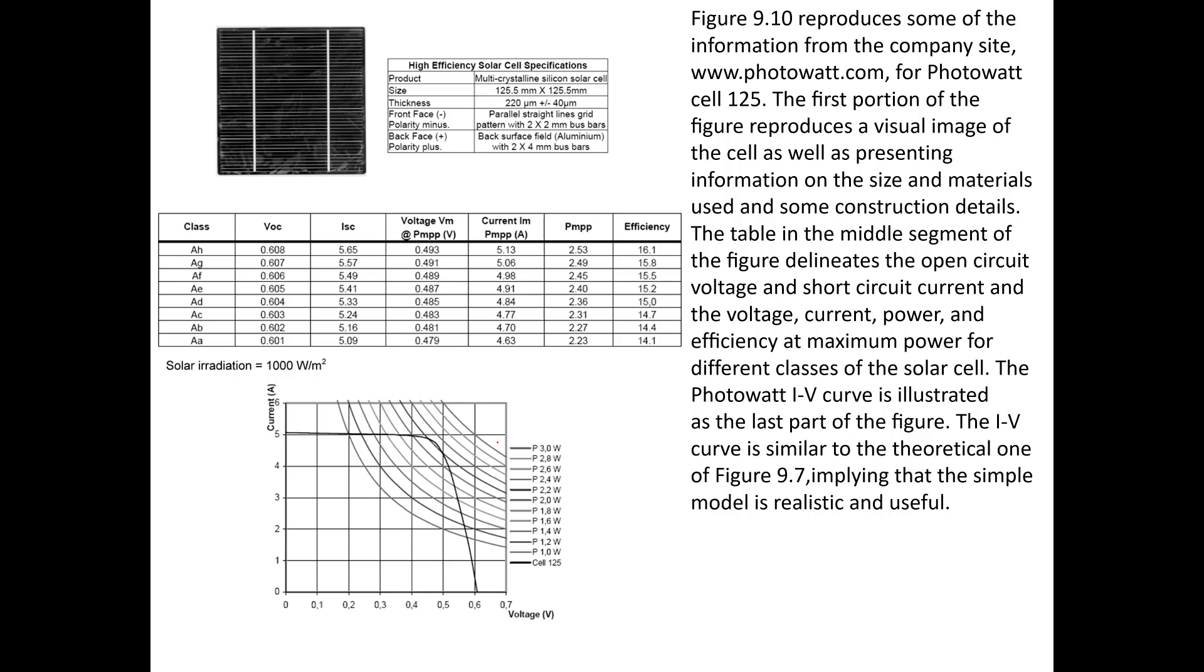The table in the middle segment of the figure delineates the open circuit voltage and short circuit current, and the voltage, current, power, and efficiency at maximum power for different classes of the solar cell. The Photowatt current voltage curve is illustrated as the last part of the figure, which is called an IV curve. The IV curve is similar to the theoretical one that we looked at earlier.